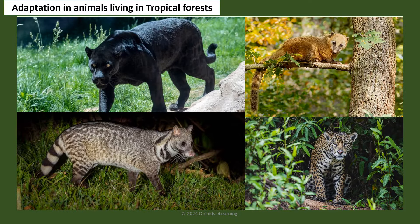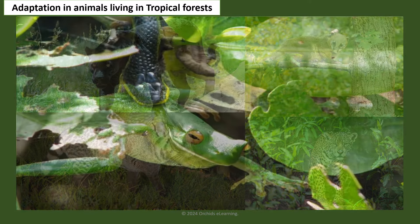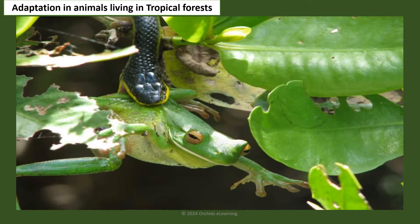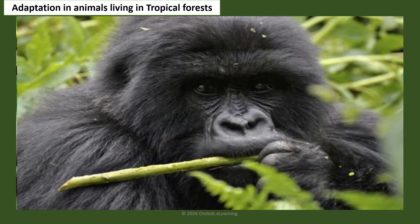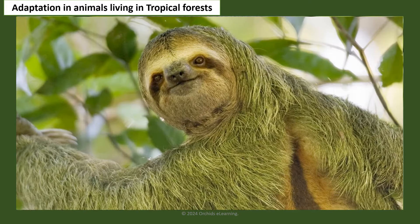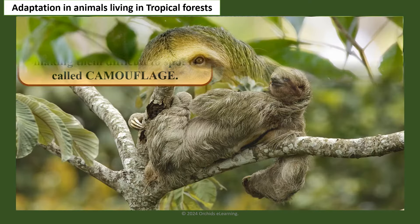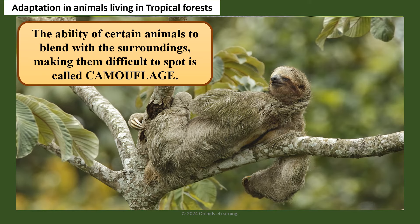There is a huge variety of animals in rainforests, so competition for food is very high. Many animals are adapted by learning to eat a particular food. The sloth exhibits camouflage — the ability of certain animals to blend with their surroundings, making them difficult to spot. This adaptation enables them to hide from predators.